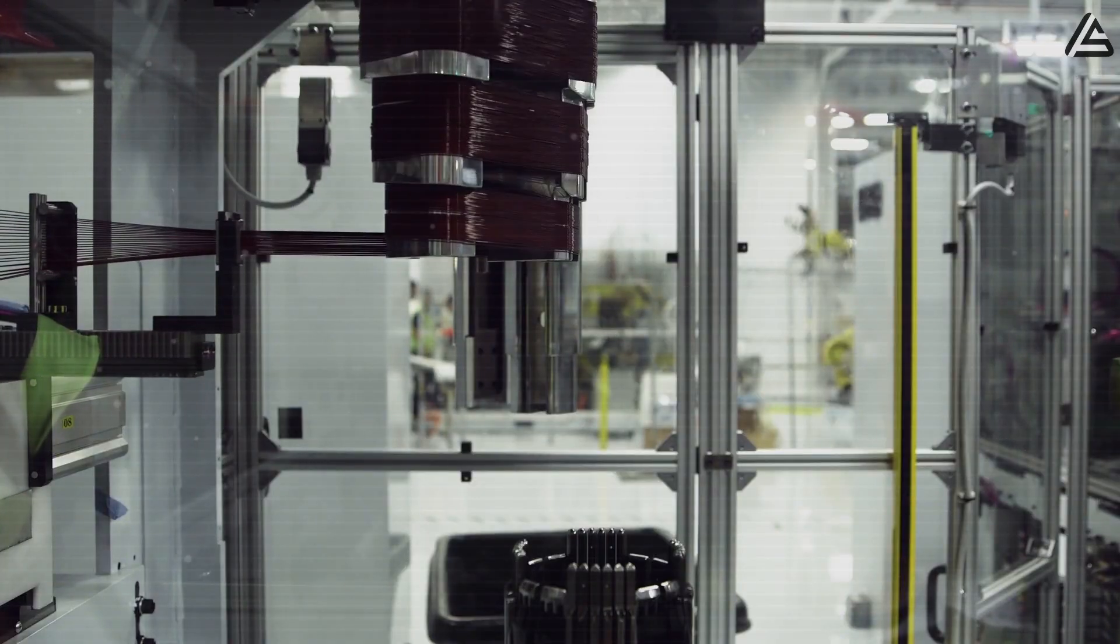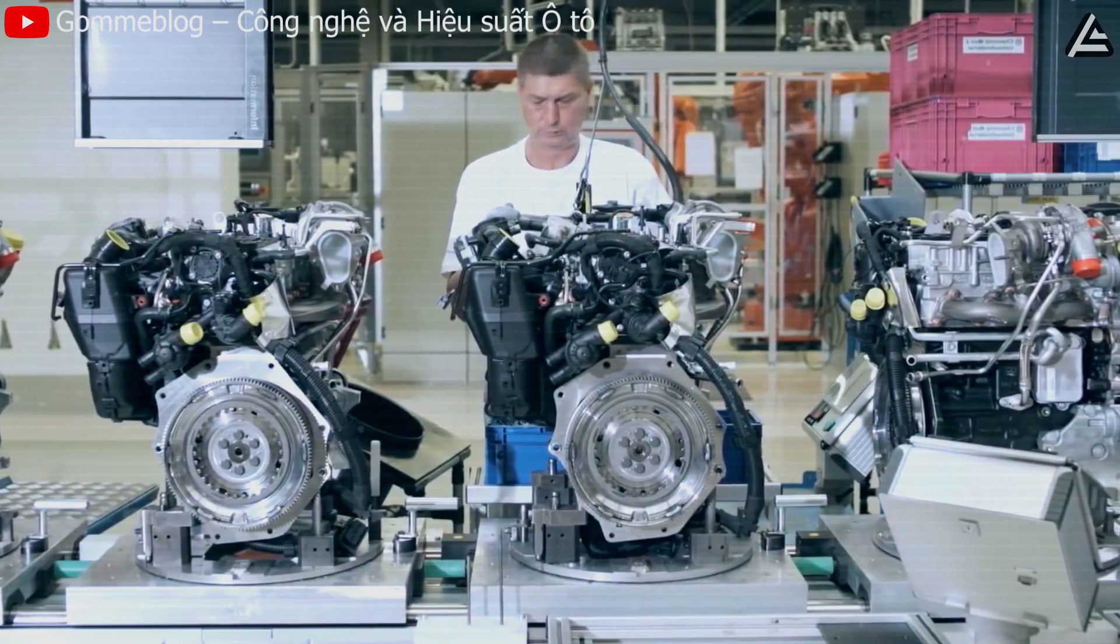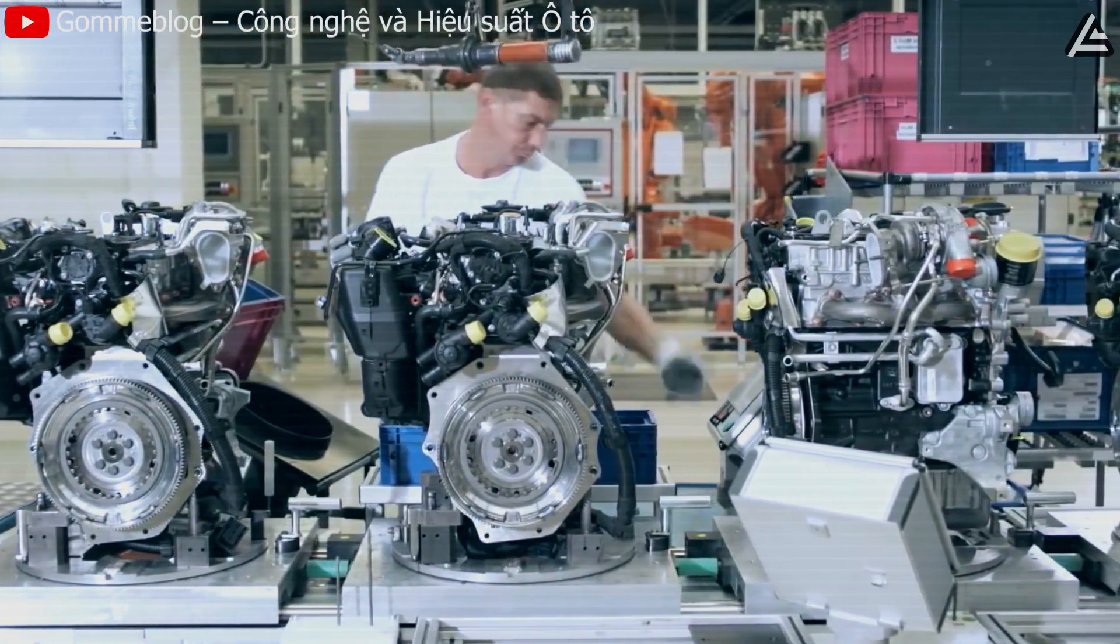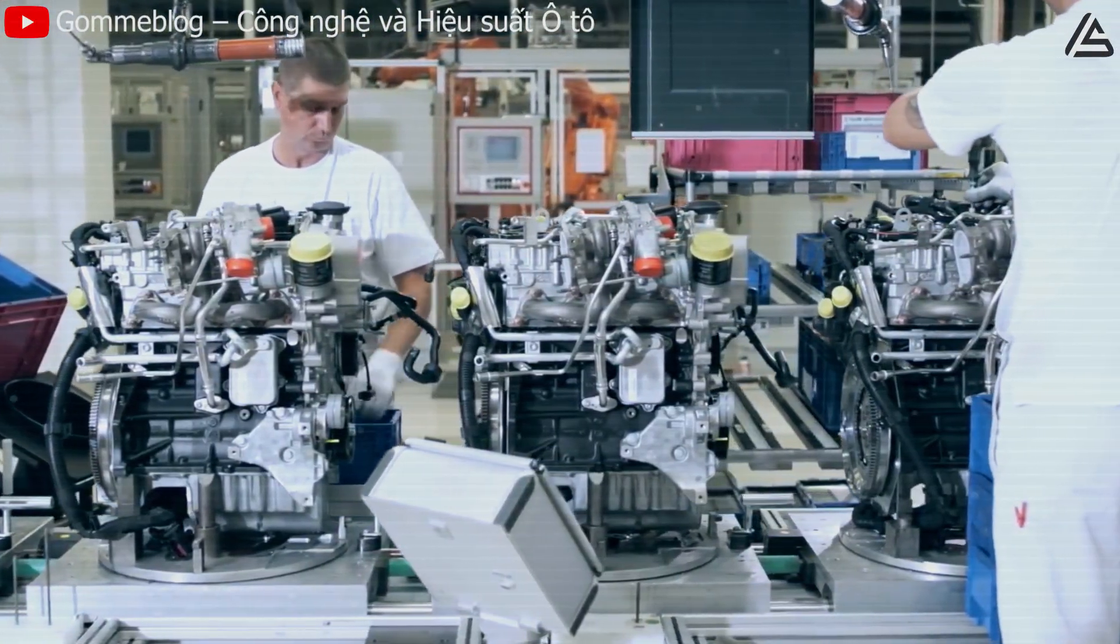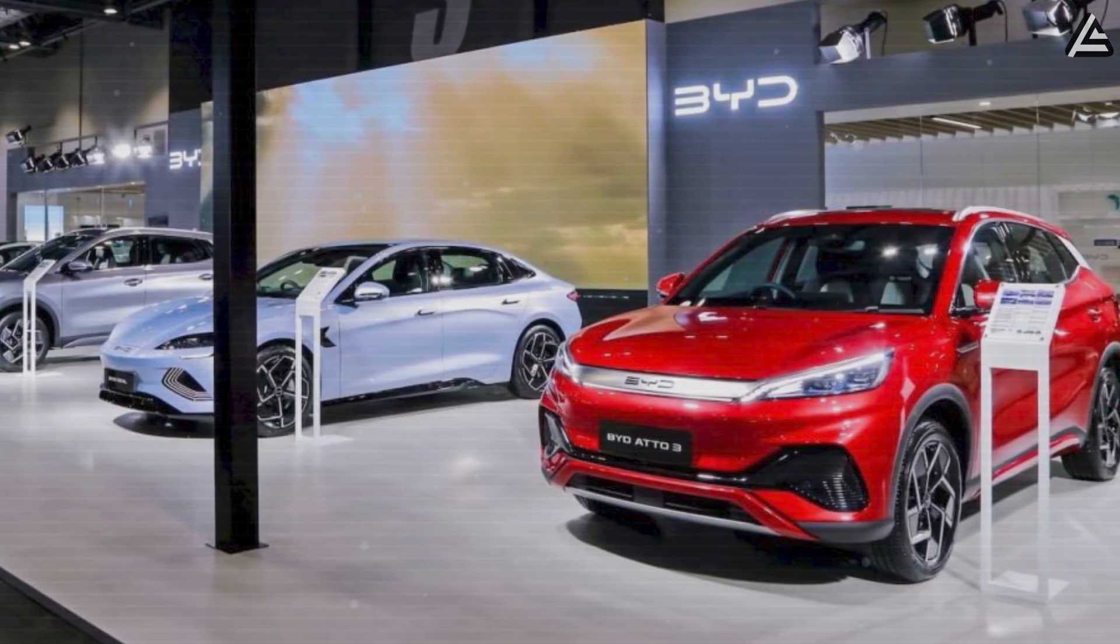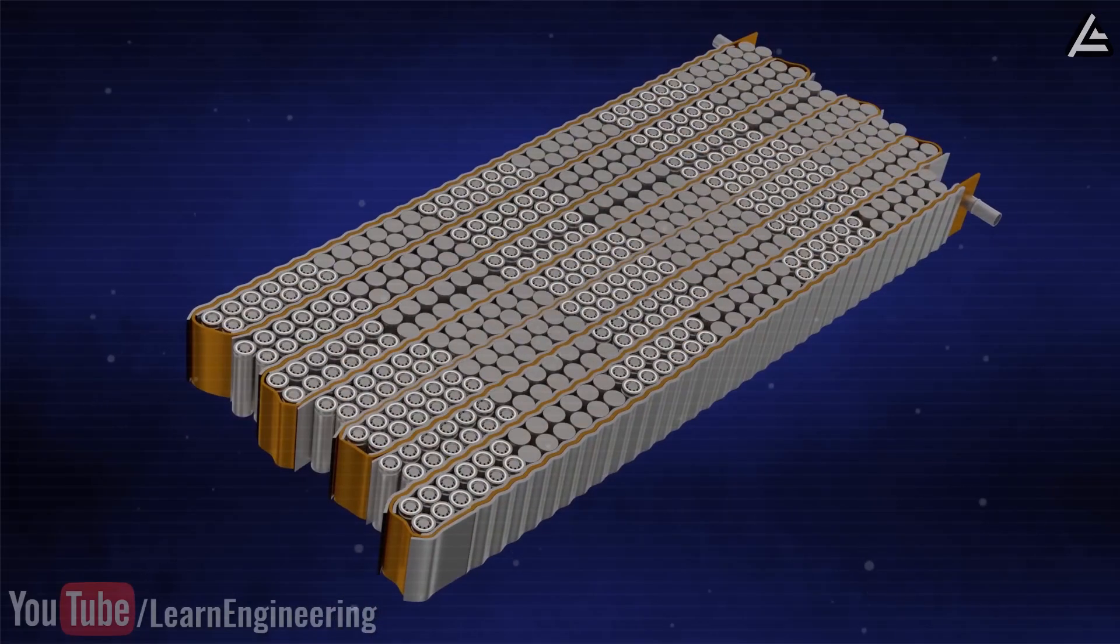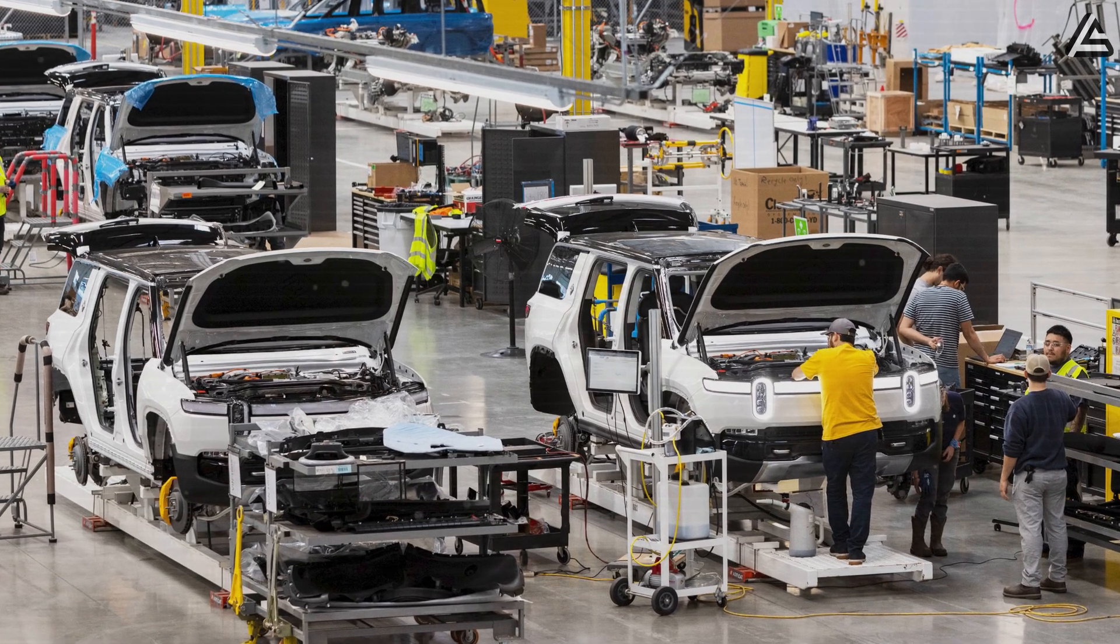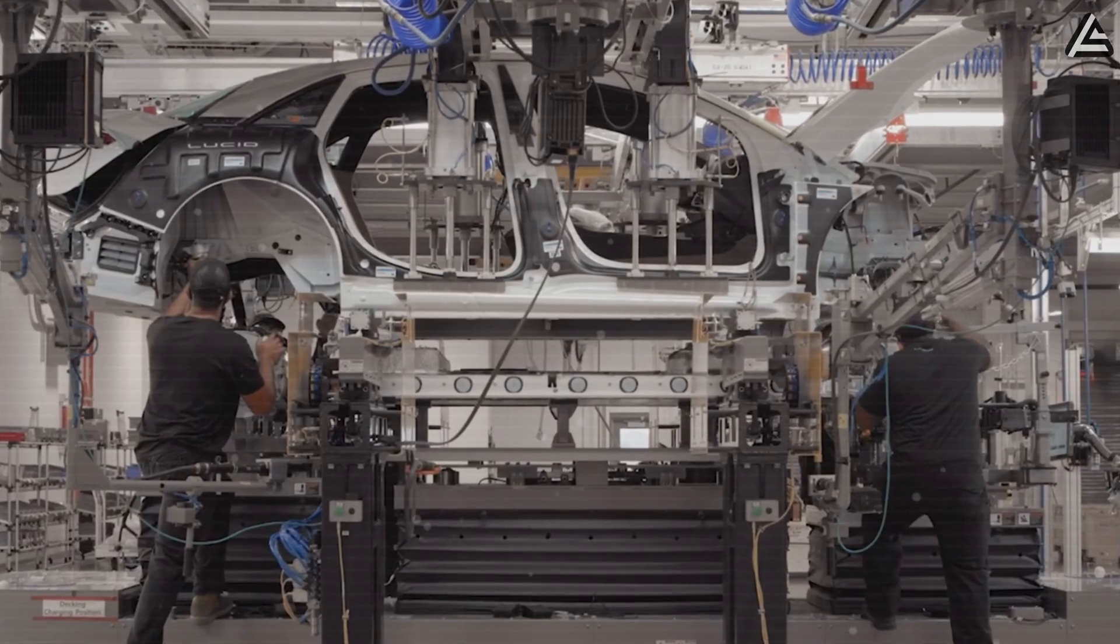Competitors are in a bind. Ford, GM, and Volkswagen are still locked into multi-billion-dollar facilities optimized for combustion engines. Converting a single line costs upward of $1.5 billion and takes 24 to 30 months. BYD may dominate in volume with 3 million EVs sold in 2024, but its reliance on lower-cost LFP chemistry and conventional motor systems limits efficiency and long-term margins. Rivian and Lucid, meanwhile, remain stuck below 80,000 annual units due to slow, high-cost manual assembly.